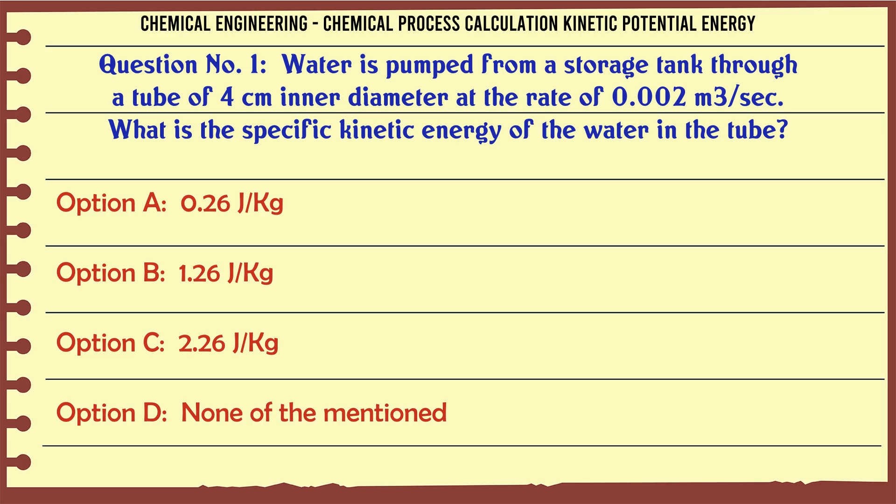A: 0.26 J/kg. B: 1.26 J/kg. C: 2.26 J/kg. D: None of the mentioned.